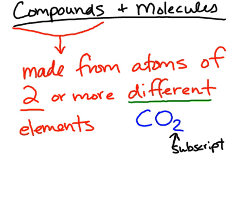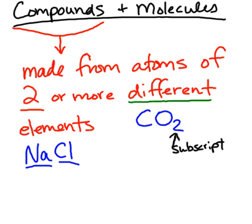Another example of a compound is sodium chloride, NaCl. A way to identify how many elements are present is that all elements on the periodic table only contain one capitalized letter — like C and O for carbon and oxygen, or Na and Cl for sodium and chlorine. Here we have two elements combined: a sodium atom and a chlorine atom forming sodium chloride — a compound. However, sodium chloride is a compound but it is not a molecule.